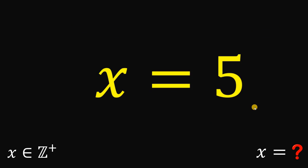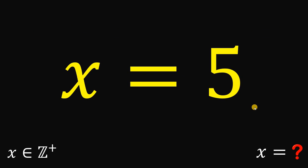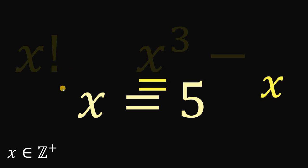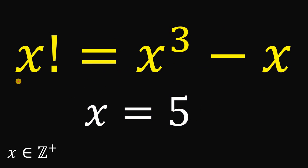Our answer to this question is x equals 5. Given the equation x factorial equals x cubed minus x, the value of x is 5. And with that, we are done.